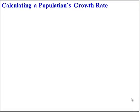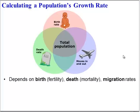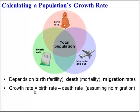Let's start by thinking about how to calculate a population's growth rate. Growth rate depends on a few factors: birth rate, or fertility rate, which will increase the population; death rate, or mortality rate, which will decrease the population; and migration rates — individuals moving in and out. If we assume there are no individuals moving in and out, we have a simple equation: growth rate equals the birth rate minus the death rate.